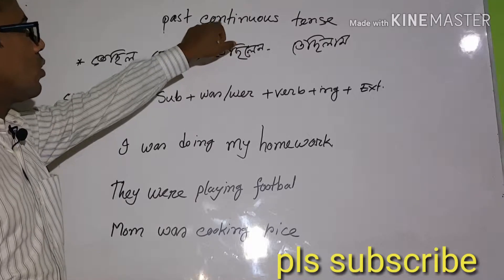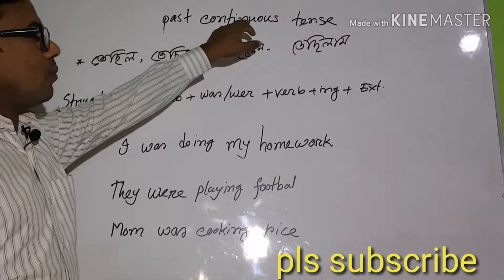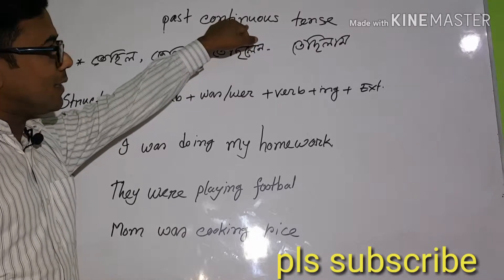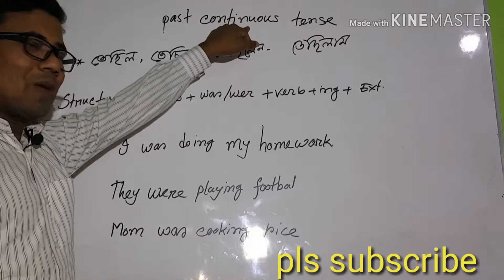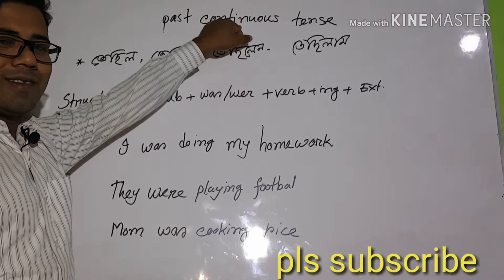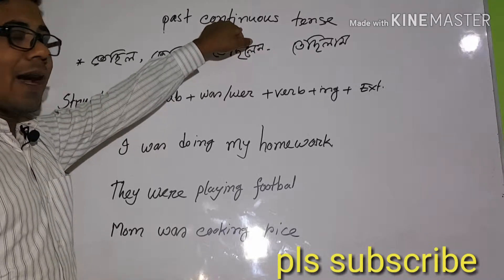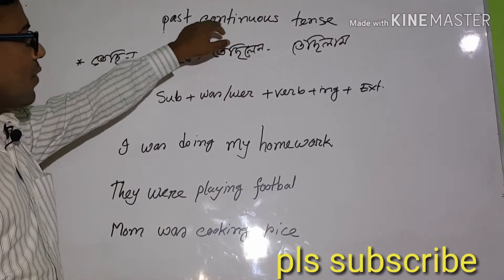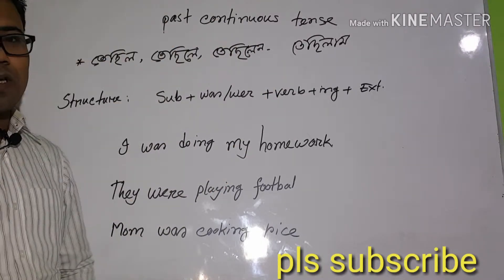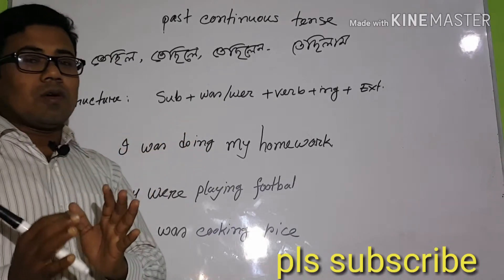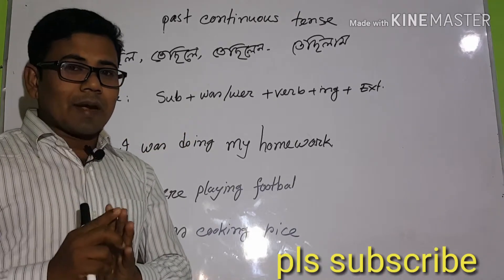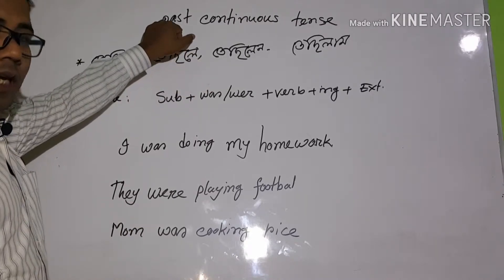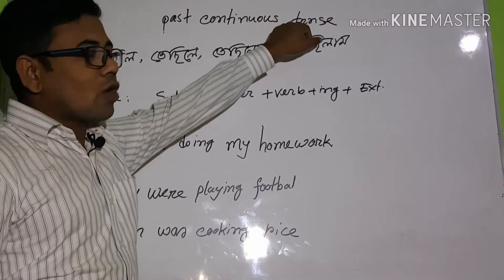In past continuous tense, we use the verb with '-ing'. The key marker is verb+ing. So the structure involves was/were with the base verb plus '-ing'. Just as present continuous uses am/is/are plus verb-ing, past continuous uses was/were plus verb-ing. This is the core idea of past continuous tense — it describes an ongoing action in the past.